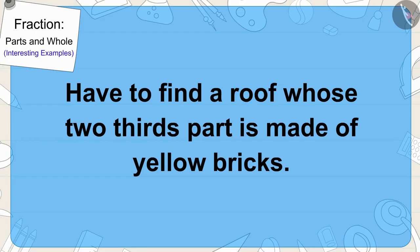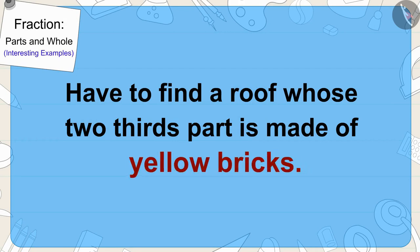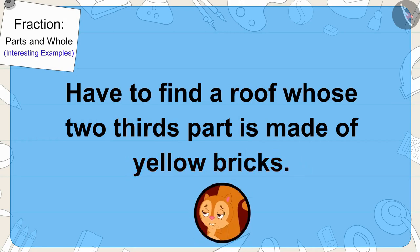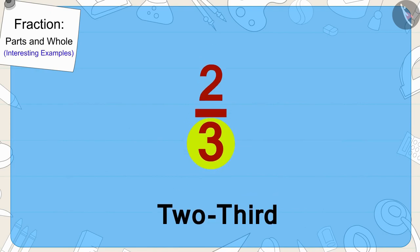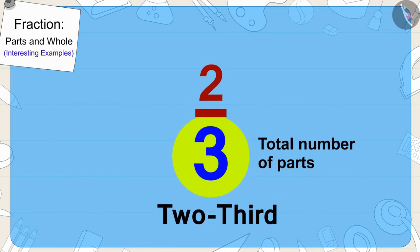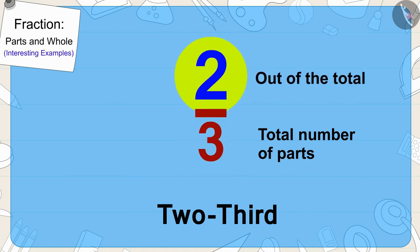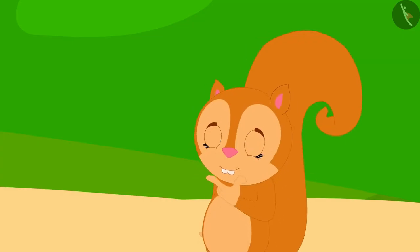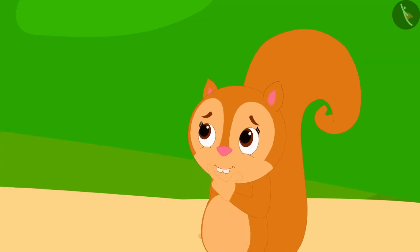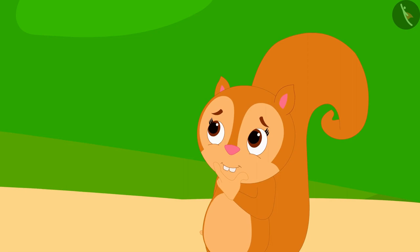It was written in that clue that she would have to find a roof whose two-thirds part is made of yellow bricks. Children, can you tell what kind of roof will it be? Yes, it will be a roof which is divided into three equal parts and two parts of it would be made of yellow bricks.